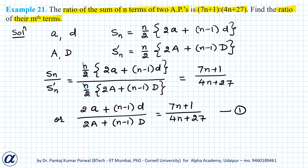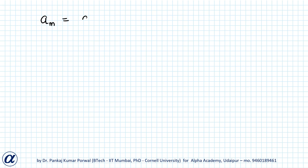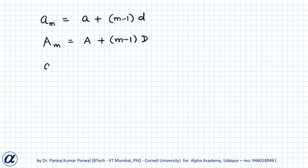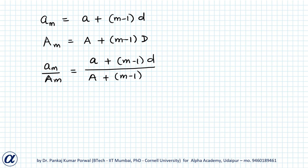Let me call this equation 1. This is what we are given, and we want to find the ratio of the mth terms of these two APs. For the first AP, the mth term is a_m = a + (m-1)d, and for the second AP, the mth term is A_m = A + (m-1)D. The ratio we want to find is a_m : A_m = (a + (m-1)d) divided by (A + (m-1)D).